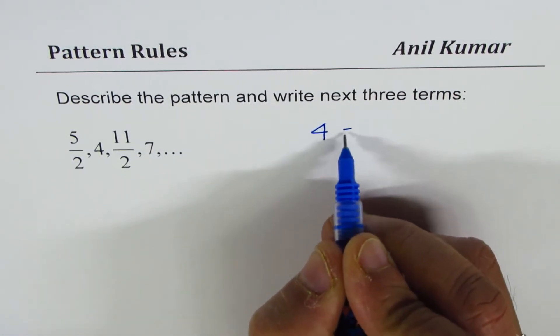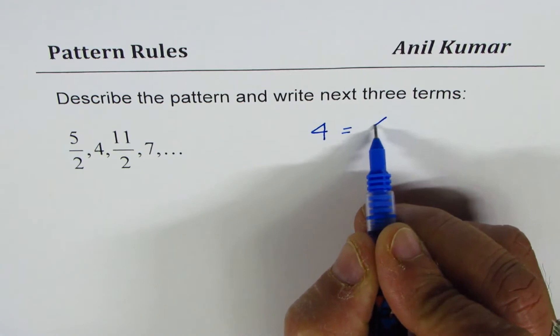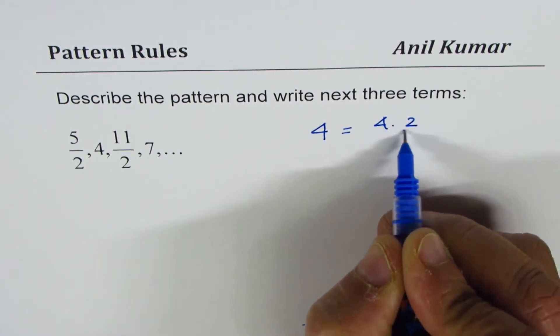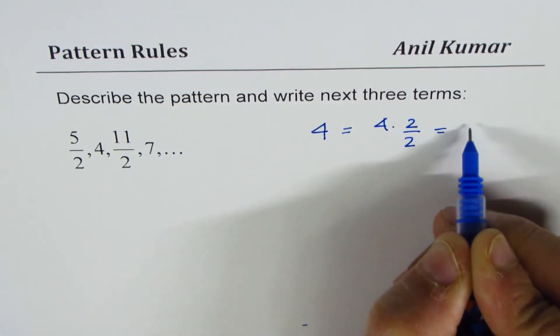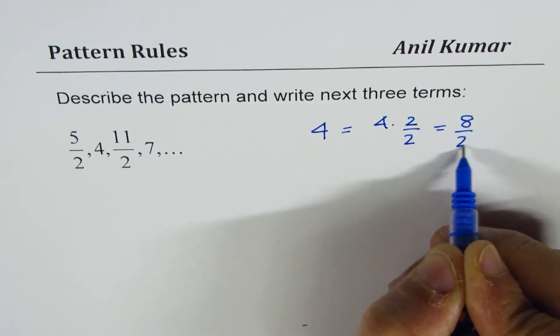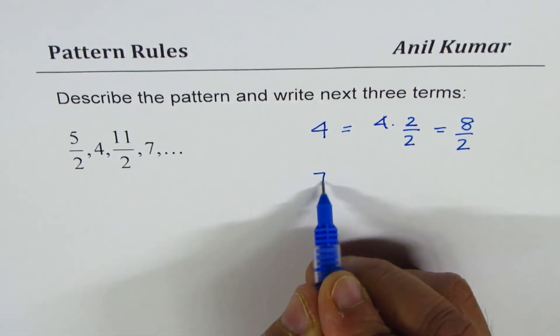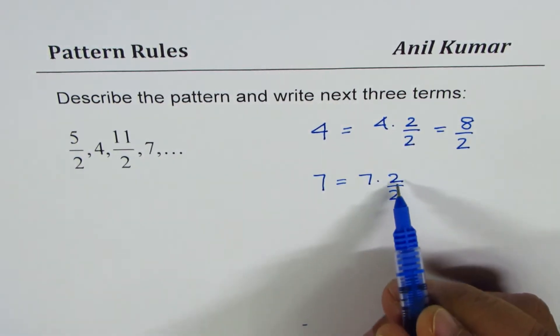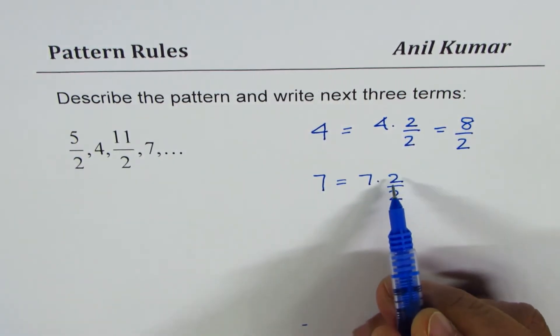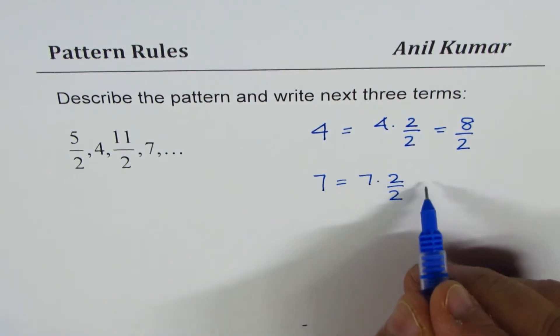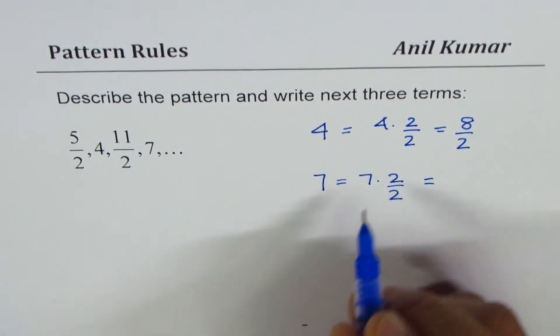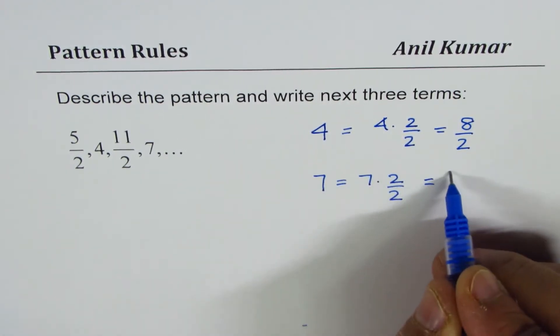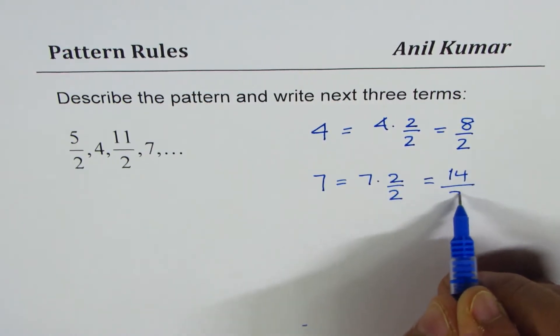That is to say, we can write 4 as equals to 4 times 2 over 2, which is 8 over 2. We can also write 7 as 7 times 2 over 2. When you multiply by 2 and divide by 2, it is as good as multiplying by 1. So it is equivalent to 7. So 7 could be written as 14 over 2.